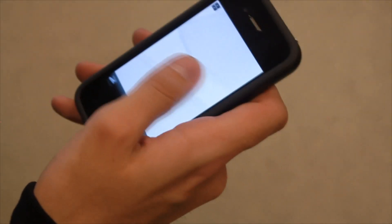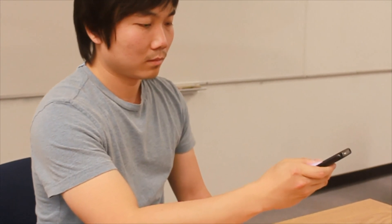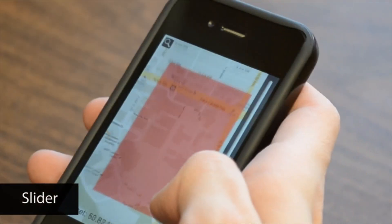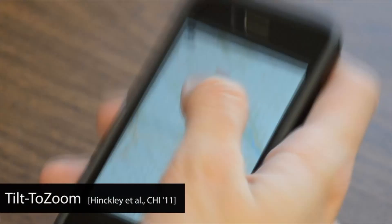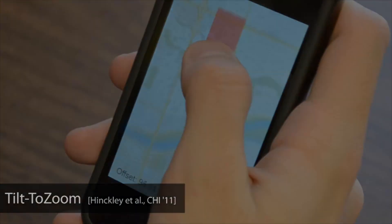Through our user study with 16 participants, we validated fat thumb and compared it to three single-handed techniques. Each uses a different approach for zooming into a map: using a slider at the border of the screen, tilting the device while holding the thumb still, or leveraging circular finger movements with the cyclostar technique.